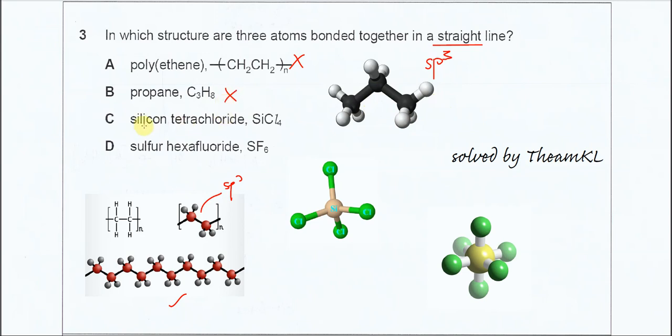For C, silicon tetrachloride, SiCl4. This molecule has tetrahedral geometry. As you can see, no three atoms in a straight line.